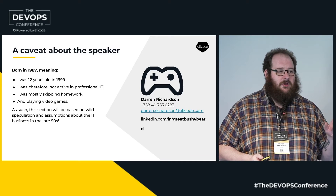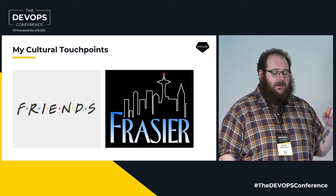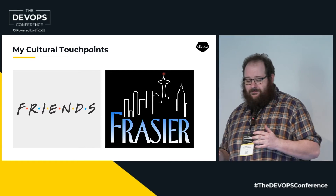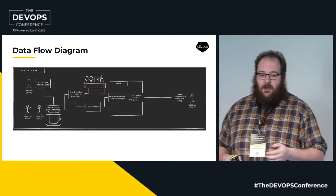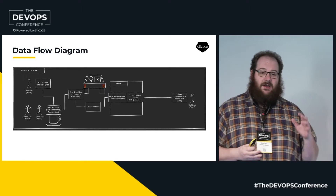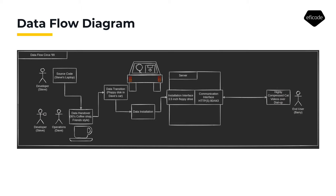So we're going to look through the cultural lens of Friends and Frasier. I assume this is how data flow happened in the 90s: you had a developer who goes to a coffee shop to hand over his code to the ops guy on a floppy disk. He'll put it in his car, take it to a server, and the server will have the software installed. This is the data flow.